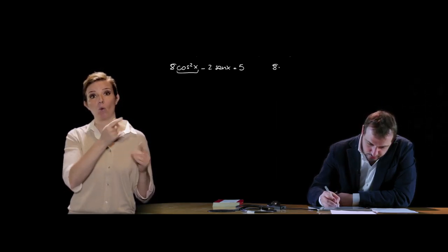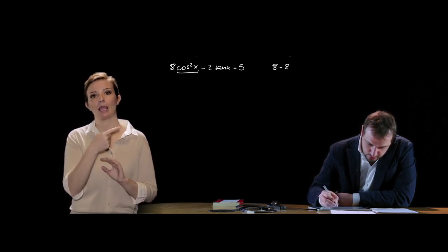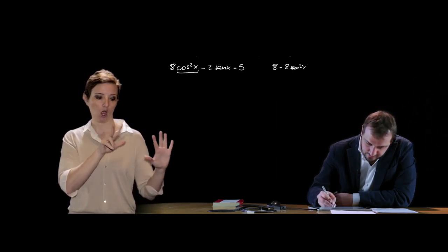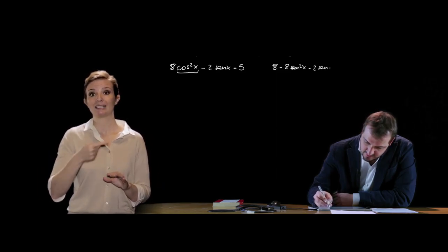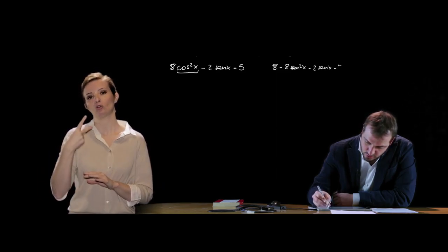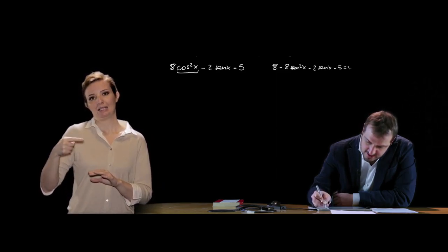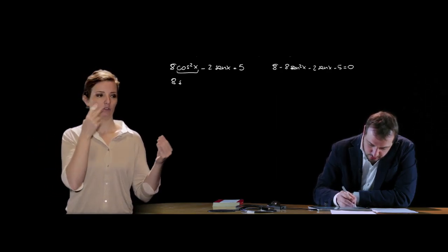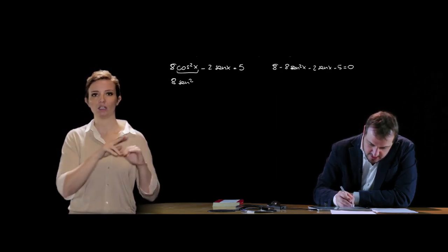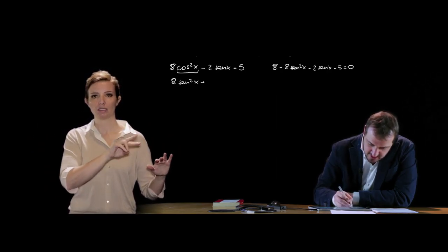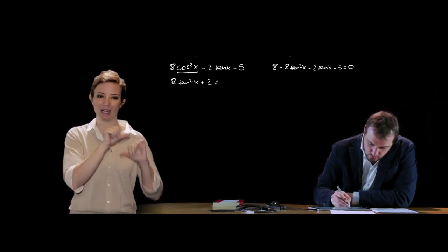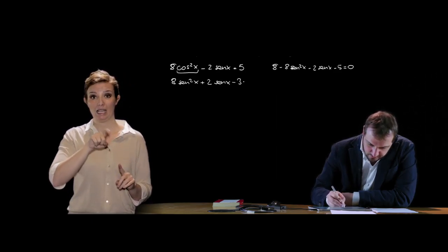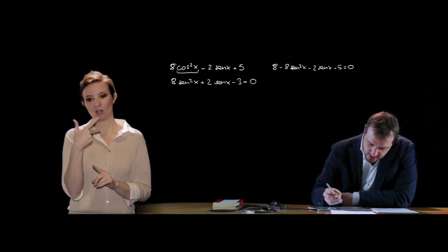Otteniamo 8 − 8 sen² x − 2 sen x − 5 = 0. Ordinando e cambiando i segni otteniamo: 8 sen² x + 2 sen x − 3 = 0.